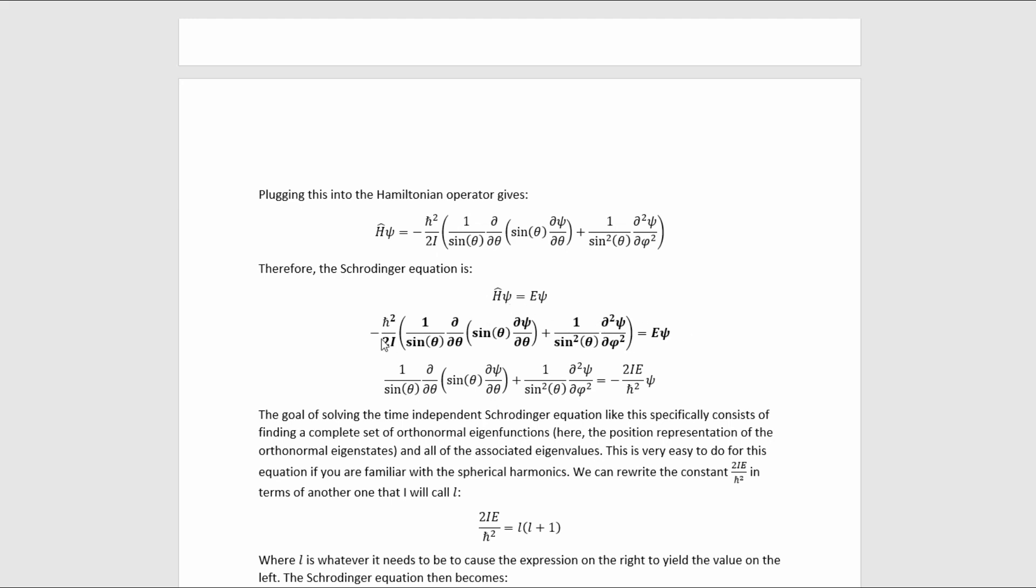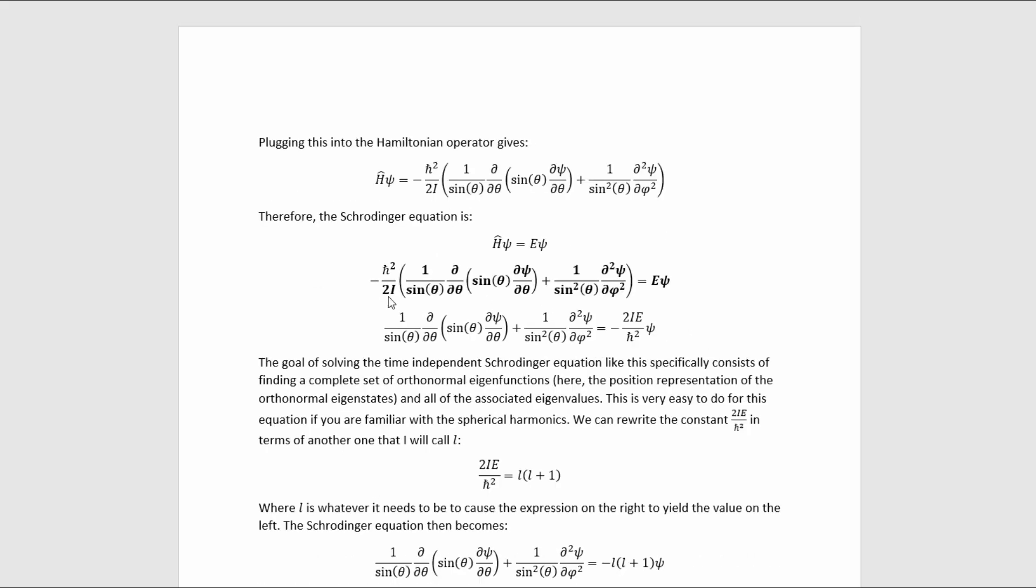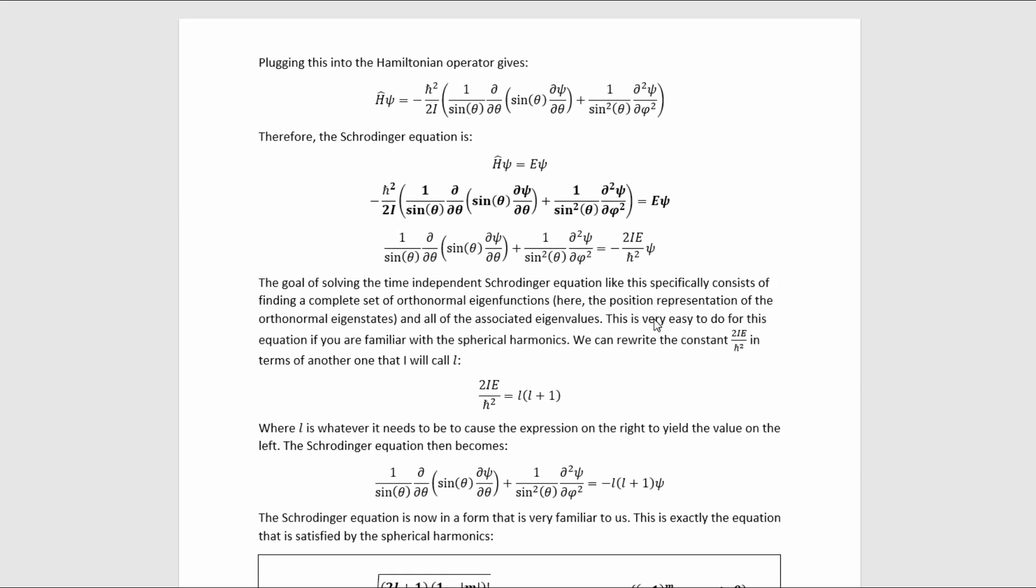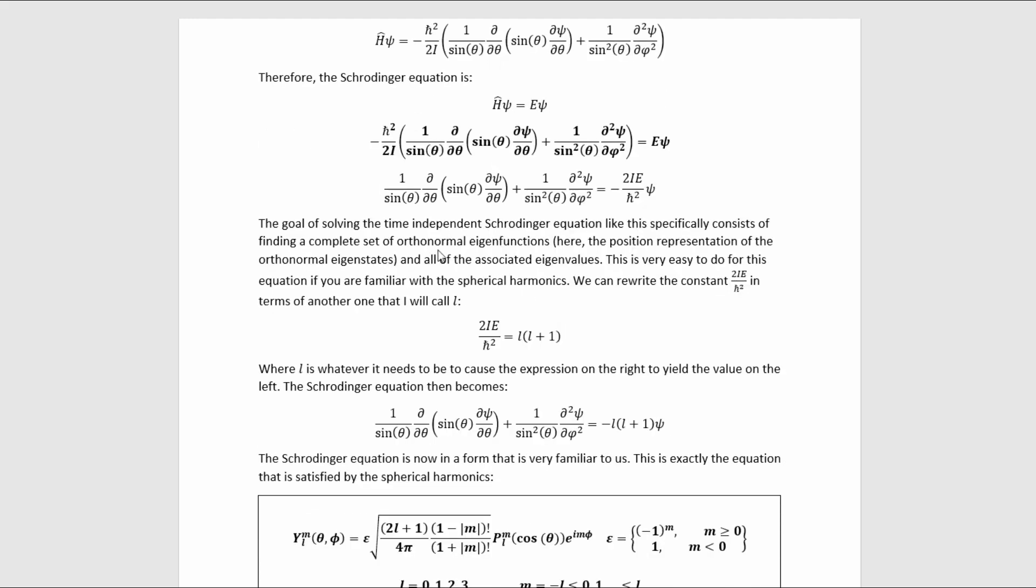Therefore, Schrödinger's equation is this, where next I moved these constants over to that side, in order to make the next step easier. The goal of solving the time-independent Schrödinger equation like this specifically consists of finding a complete set of orthonormal eigenfunctions, here the position representation of the orthonormal eigenstates, and all of the associated eigenvalues. The goal of solving the Schrödinger equation for this system, as I just described, is very easy if you're familiar with spherical harmonics.